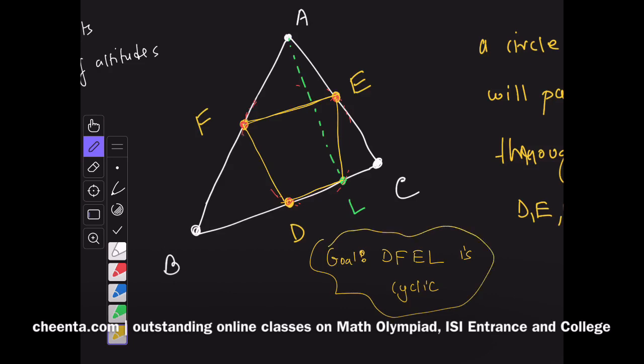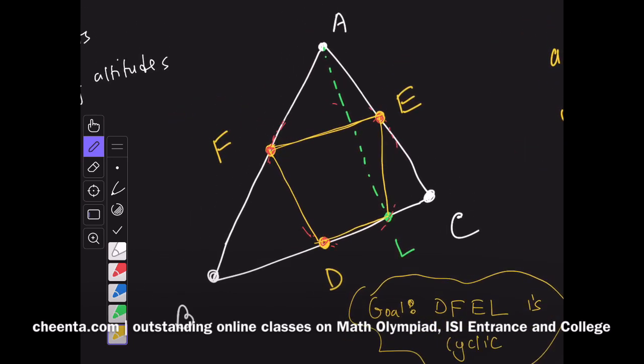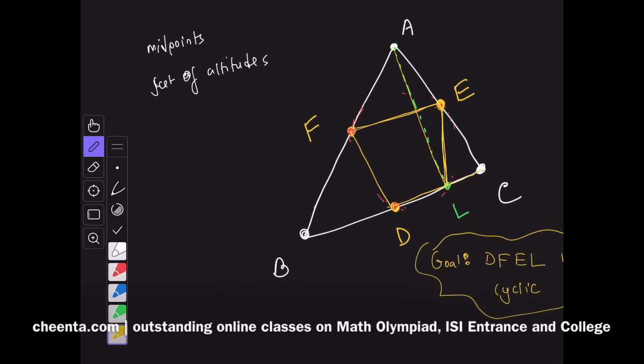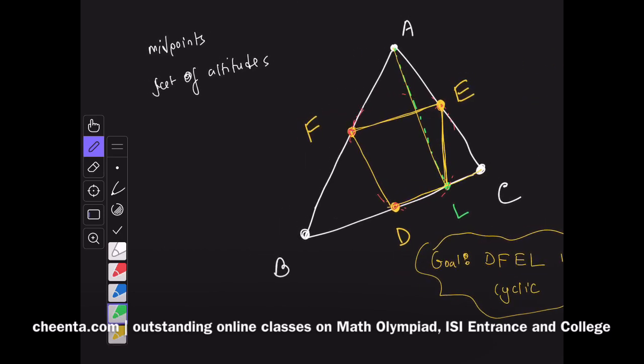How do we show this? As a first step, let's observe that the point E is the circumcenter of triangle ALC. This is a pretty big claim and such an important claim, and I'll ask you to actually do this as an exercise.